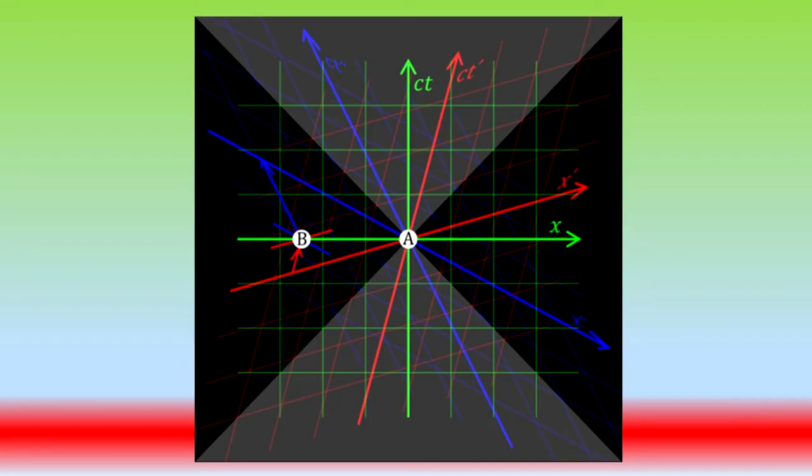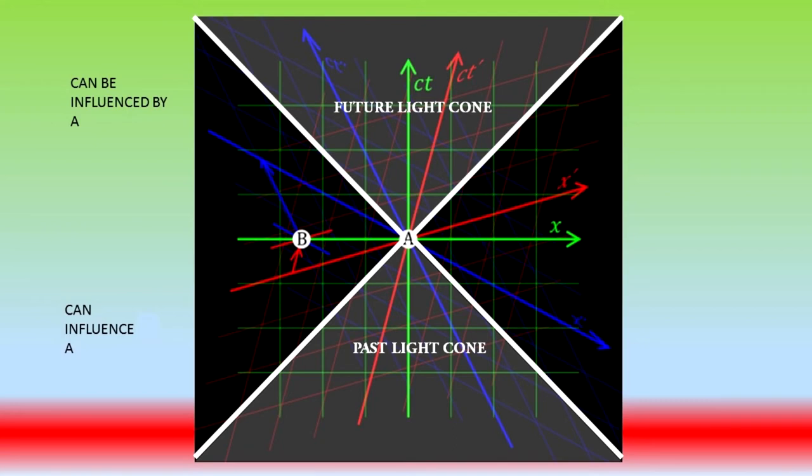Look at this graph. The outgoing light rays from the event at the origin, event A, form a surface in time-space called the event's future light cone. The light rays converging on A form a surface called A's past light cone. The events found in these cones can be influenced and can influence A, respectively.